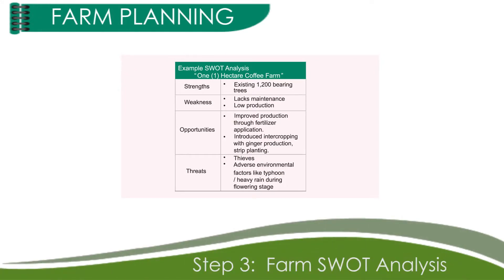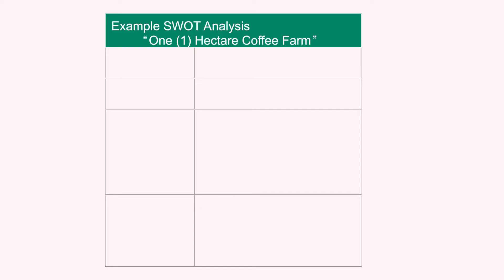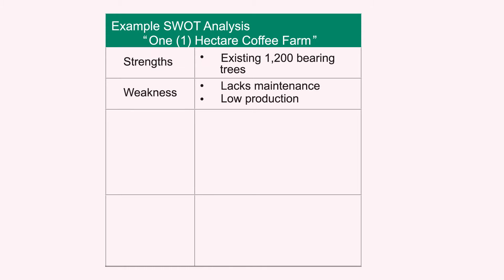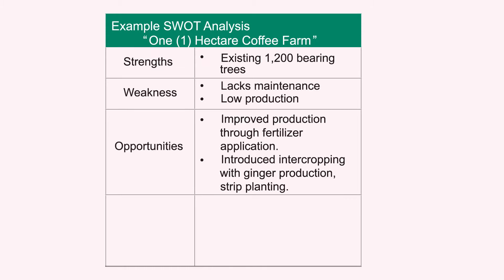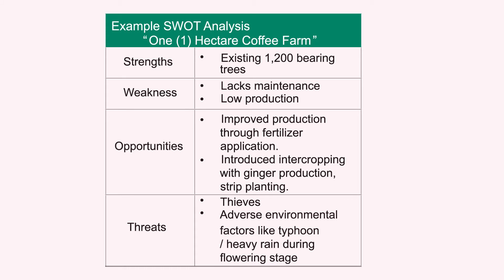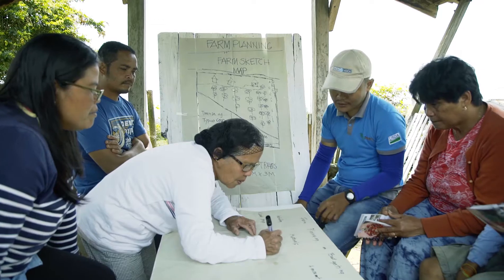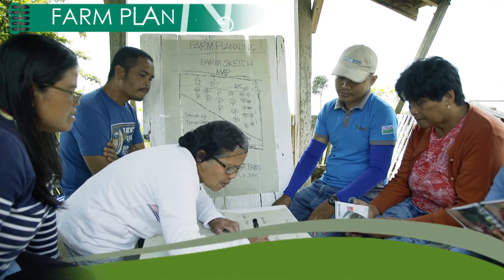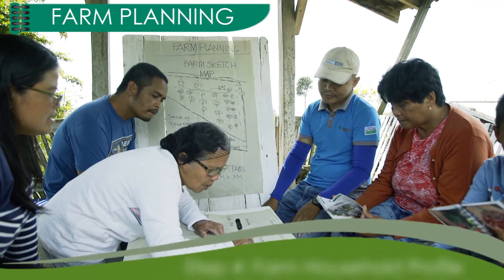Step 3: Farm SWOT analysis. Describe the strengths, weaknesses, opportunities, and threats. Each profile should include the following components.